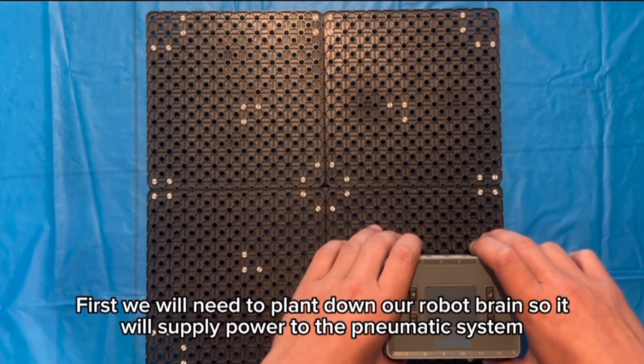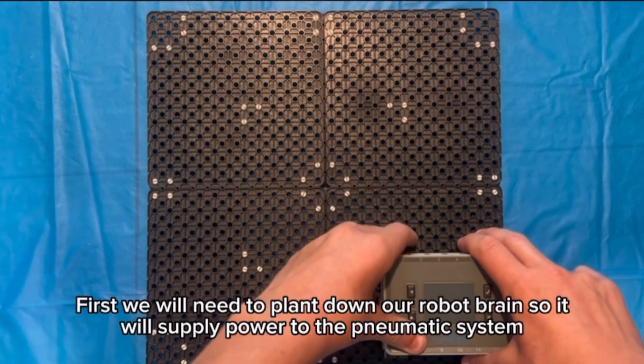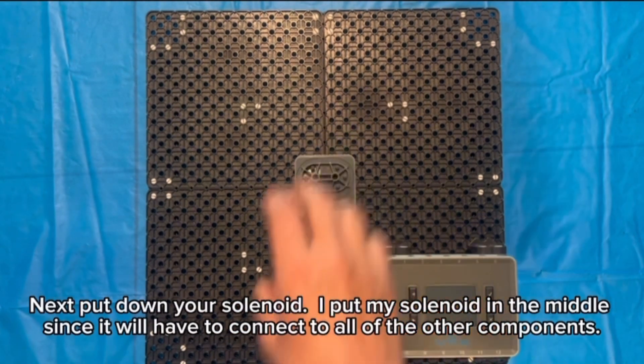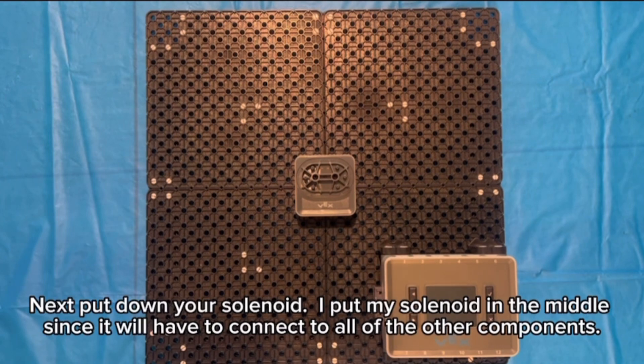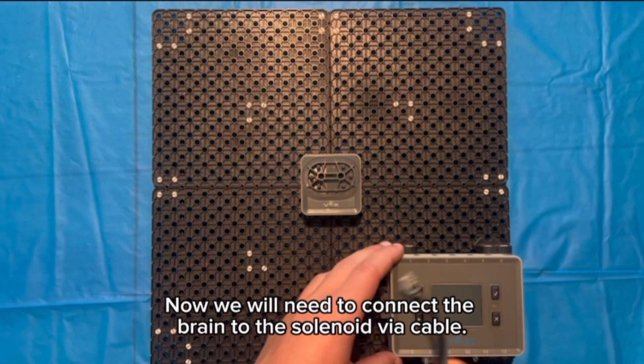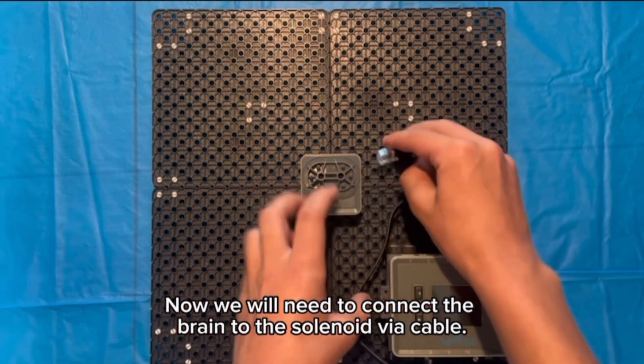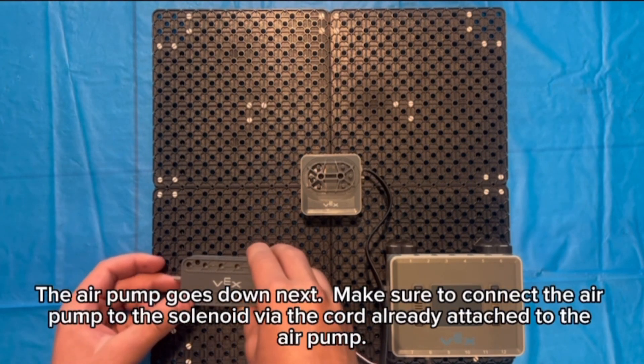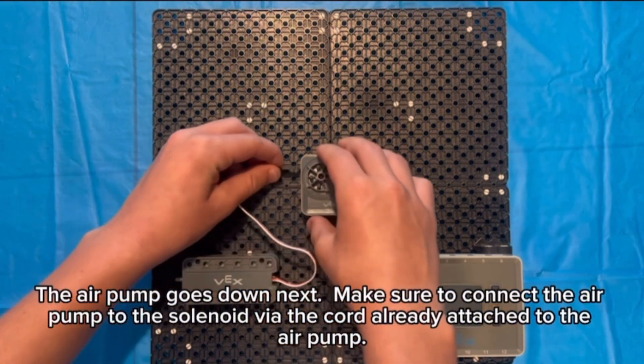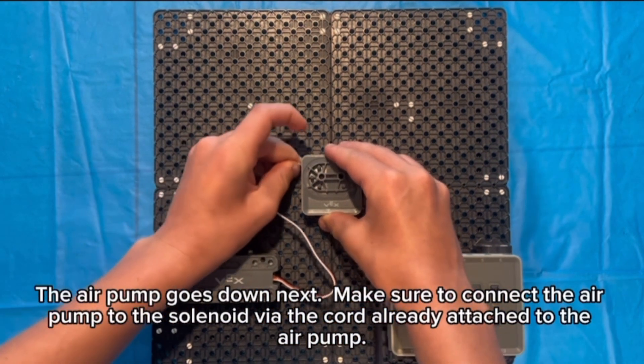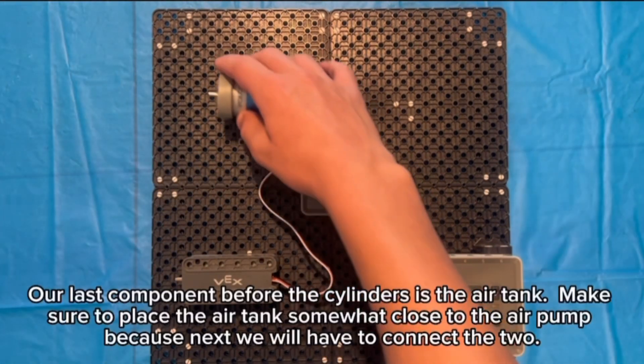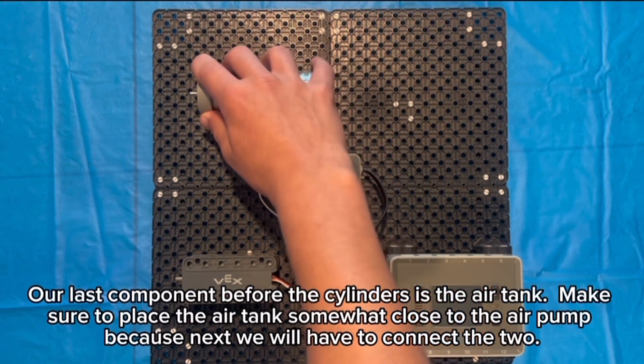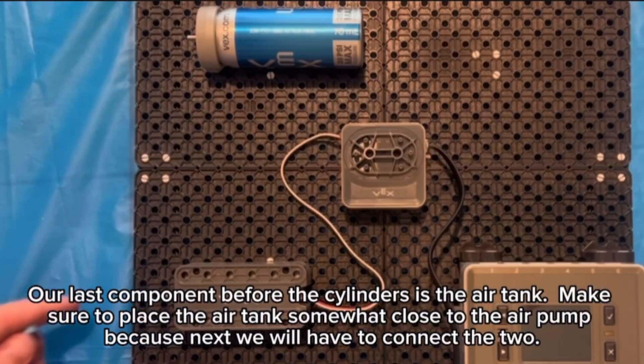First we will need to plant down our robot brain so it will supply power to the pneumatic system. Next put down your solenoid. I put my solenoid in the middle since it will have to connect to all the other components. Now we will need to connect the brain to the solenoid via cable. The air pump goes down next. Make sure to connect the air pump to the solenoid via the cord already attached to the air pump. Our last component before the cylinders is the air tank. Make sure to place the air tank somewhat close to the air pump because next we will have to connect the tube.